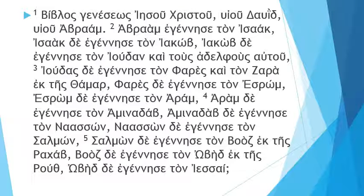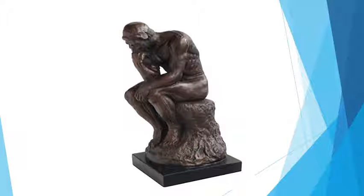Here we have the passage we're going to look at. I'll read a bit of it — I'm not going to bore you by reading the whole lot, but we'll get a feel of it. You can either laugh at my pronunciation or gently agree with it. So we've got: Biblos Geneseos, Iesu, Christu, Huio, Dawid, Huio, Abram. Let's go to the next page and have a think about this — it's really not that complicated at all.